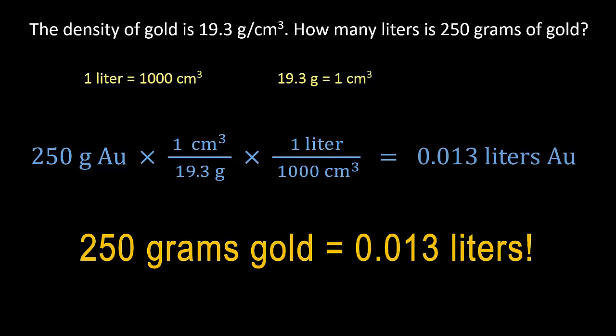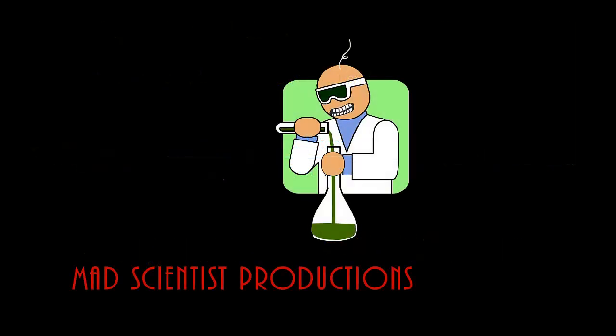The answer tells us that 0.013 liters of gold will have a mass of 250 grams. I hope you can see that dimensional analysis is a powerful method for solving unit conversions. Click here for applying dimensional analysis to metric prefix conversions, and here for applying dimensional analysis to mole conversions. See ya!